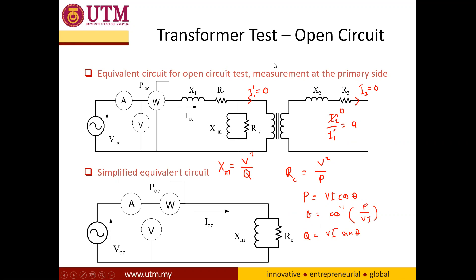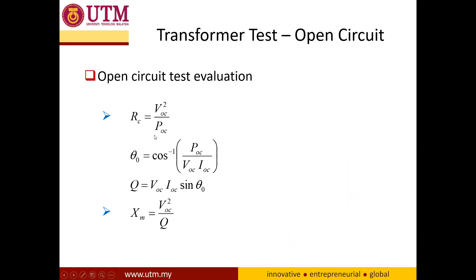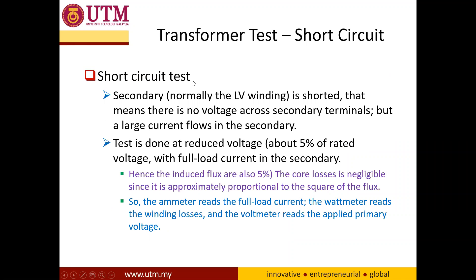So it is straightforward. For the short circuit test, the secondary is shorted and the reading is obtained at the primary side. Since it is short circuit, there is no voltage at the secondary terminal but a very large current will flow. To avoid this, the test is done at a very low voltage — for example, five percent of the rated voltage — so the current at the secondary is considered as full load current. At this low voltage, the core losses represented by RC can be assumed negligible.